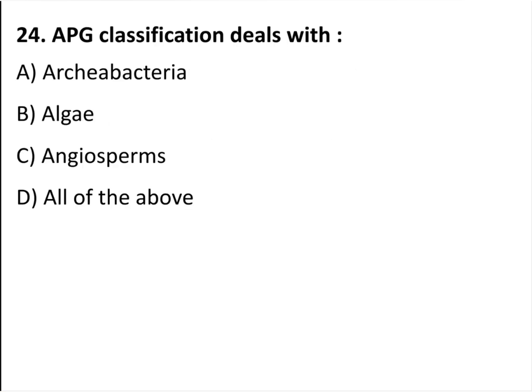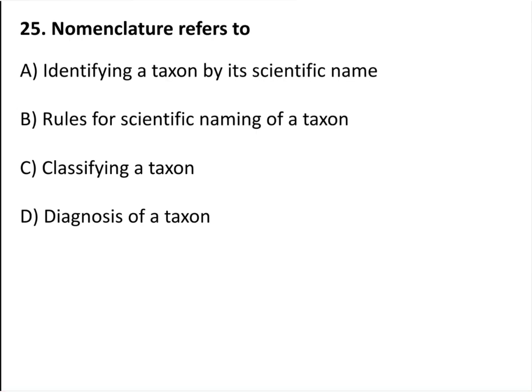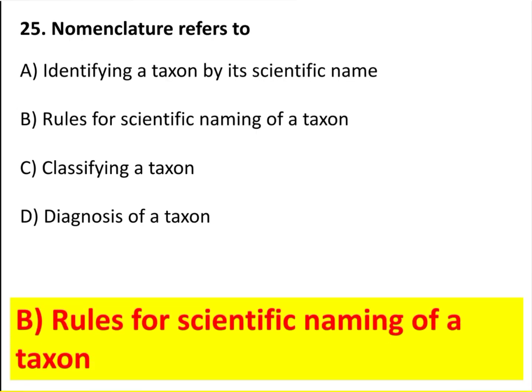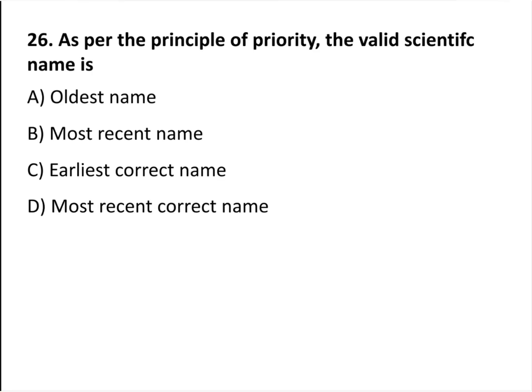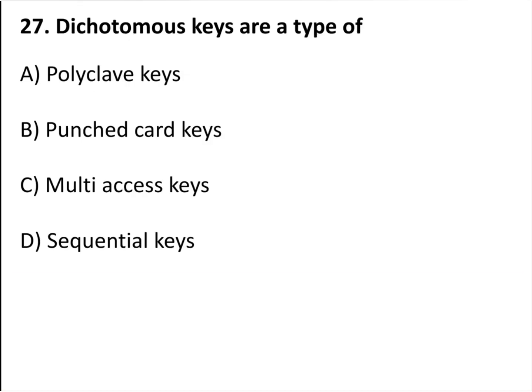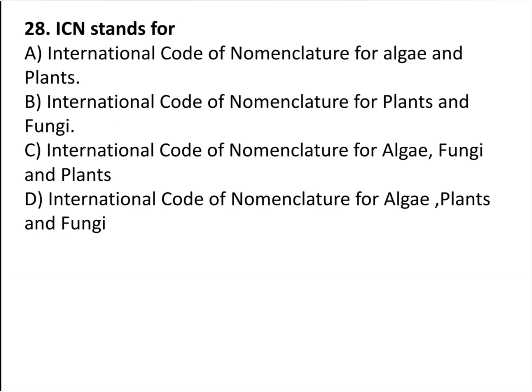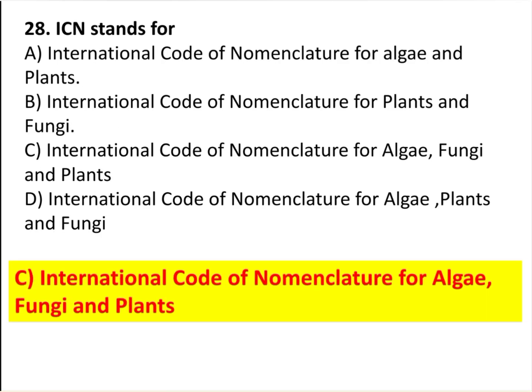APG classification deals with angiosperms. Nomenclature refers to rules for scientific naming of a taxon. As per the principle of priority, the valid scientific name is the earliest correct name. Dichotomous keys are a type of sequential keys. ICN stands for International Code of Nomenclature for Algae, Fungi and Plants.